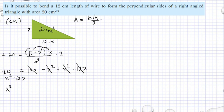Then we have X squared minus 12X plus 40 equals 0. By quadratic formula,